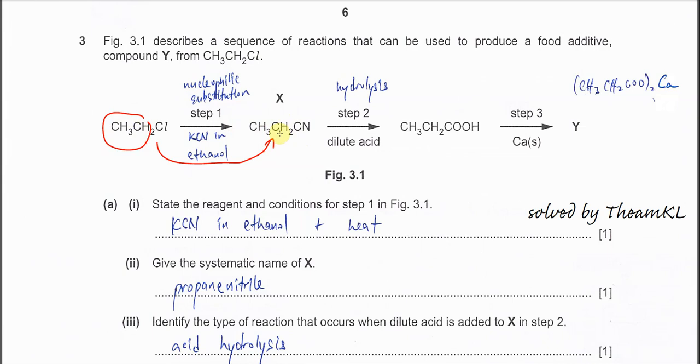So any things that involve addition of carbon must involve nitrile. It's very clear that the nitrile group has substituted the chloroethane. So it's a nucleophilic substitution and we must use KCN in ethanol with heat.